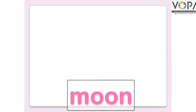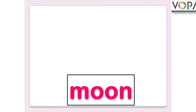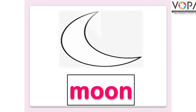पहला बॉक्स है जिसमें वर्ड लिखा हुआ है — Moon. M-O-O-N. मून, यानी चाँद। तो बच्चों, हमको इस खाली जगह में किसकी तस्वीर बनानी है? चाँद की। Moon.